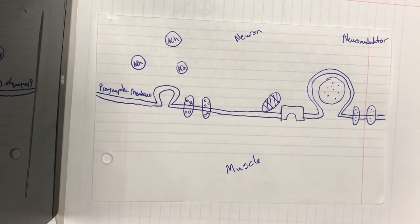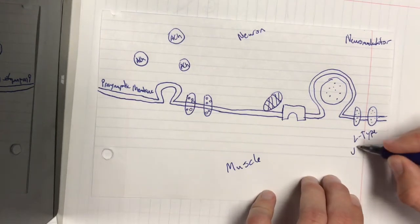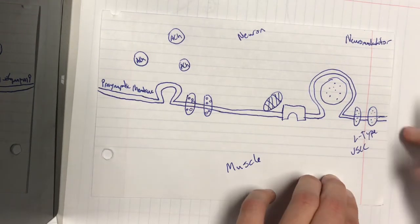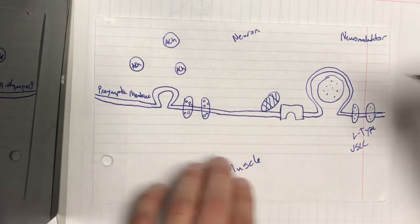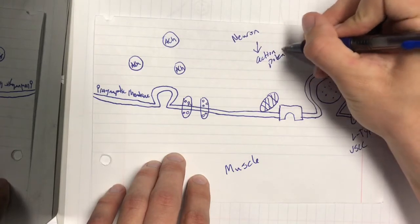The particular channel that TX7 effects is the L-type VSCC which is right here. VSCC stands for voltage sensitive calcium channel. Whenever we have an action potential moving down the neuron,